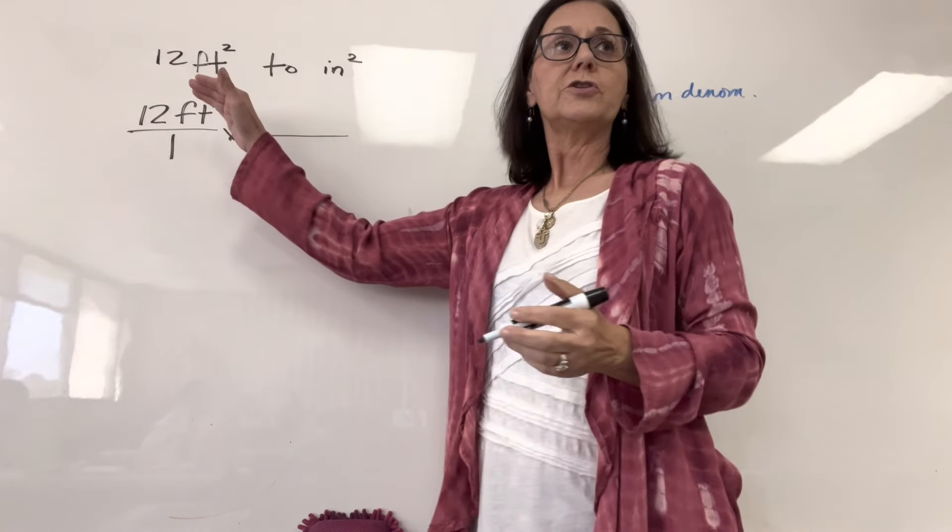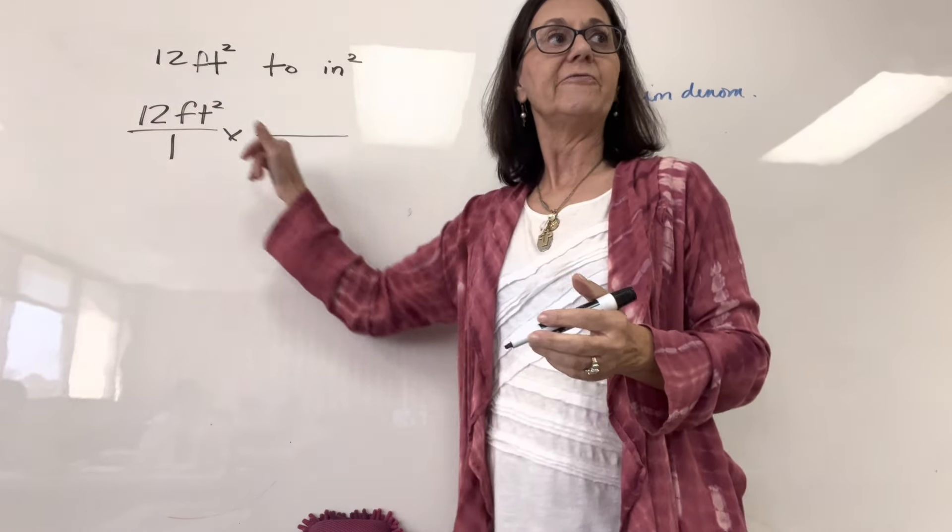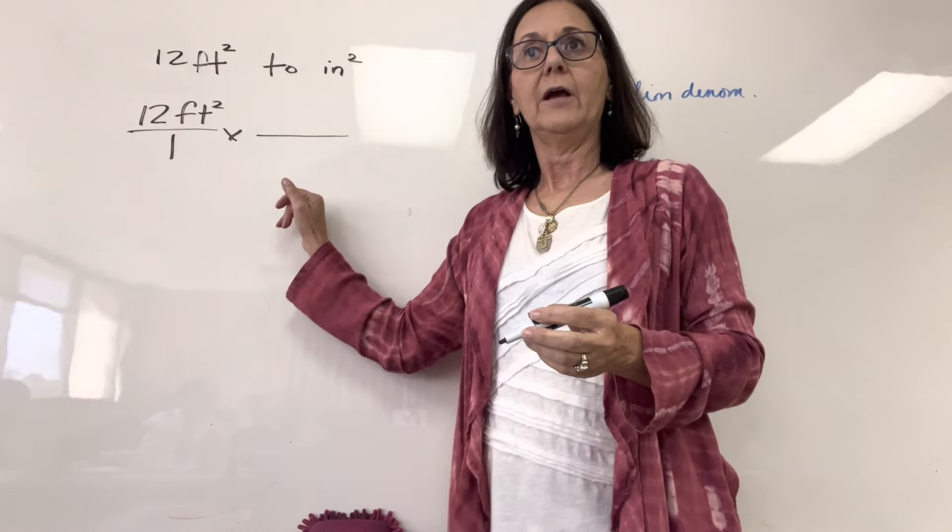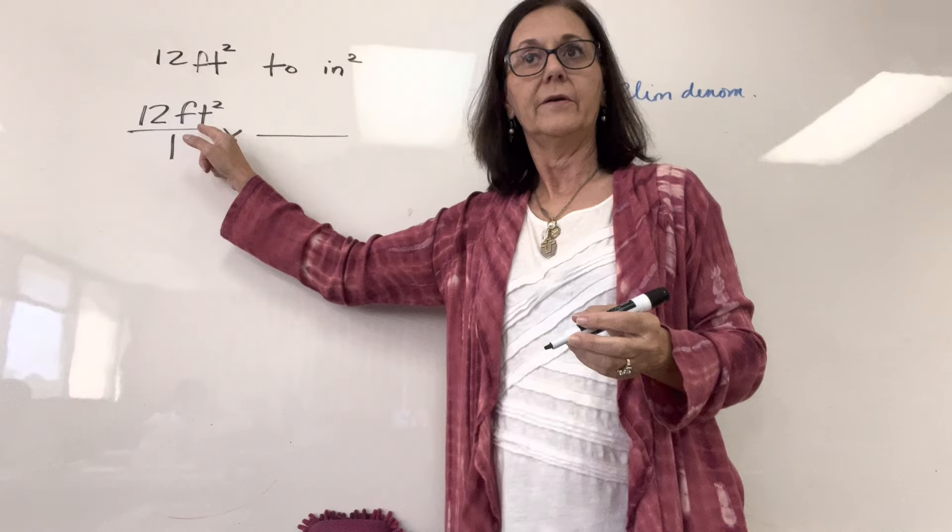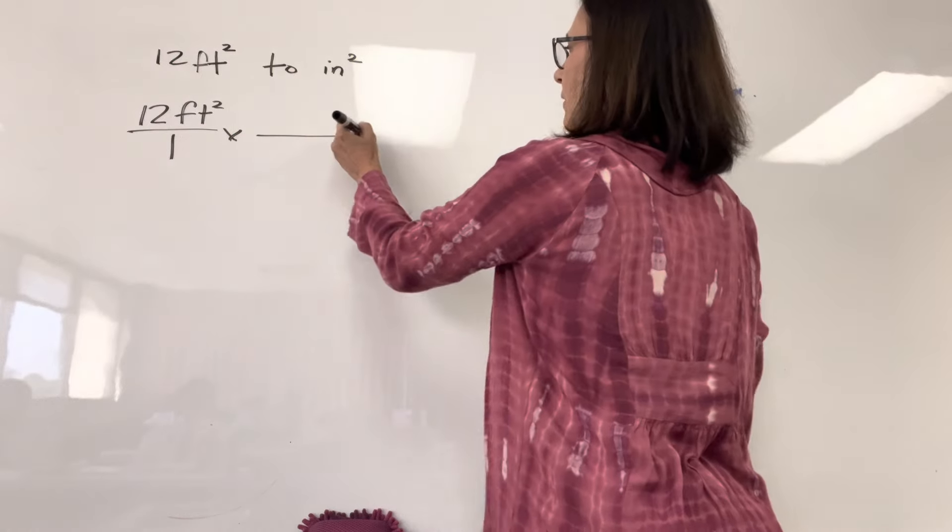Feet now must be in the denominator, but how many feet have to be in the denominator to cancel out feet squared? Two. You need two unit multipliers.